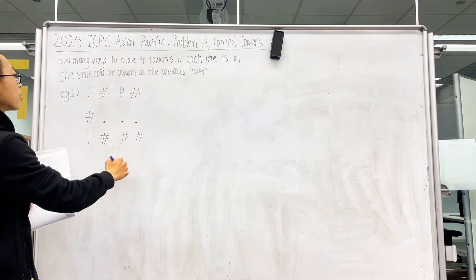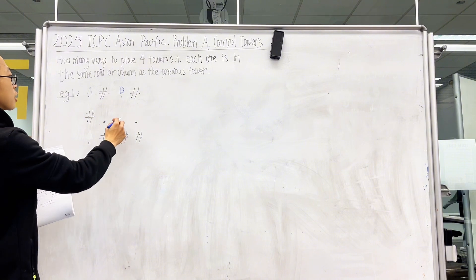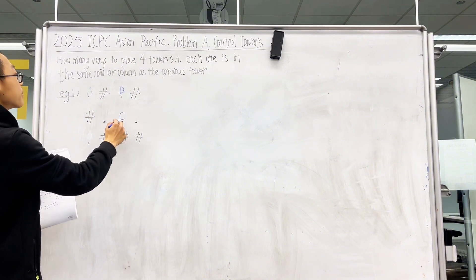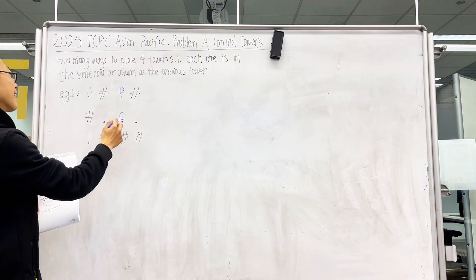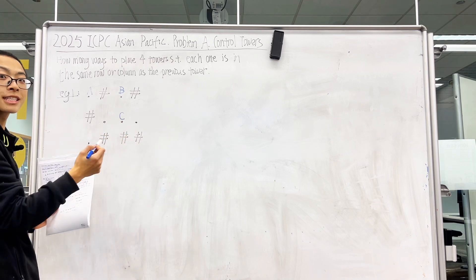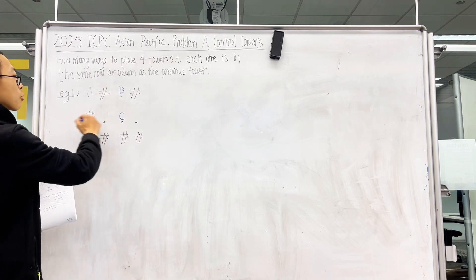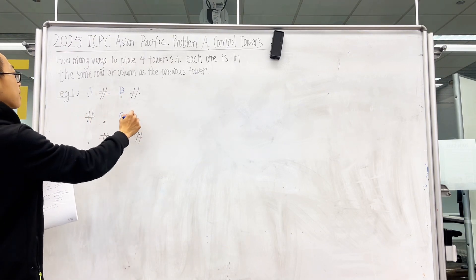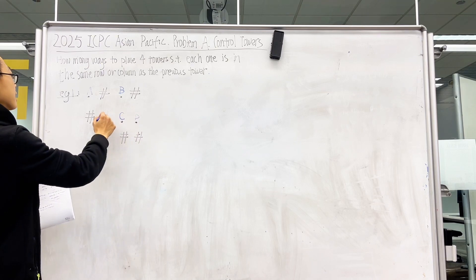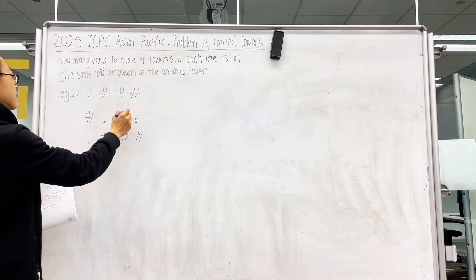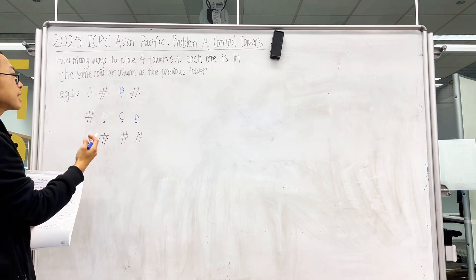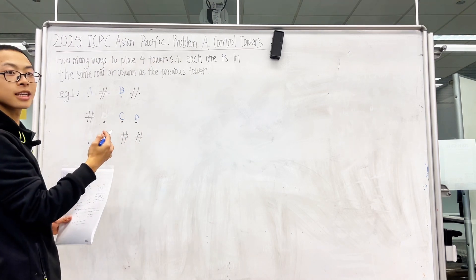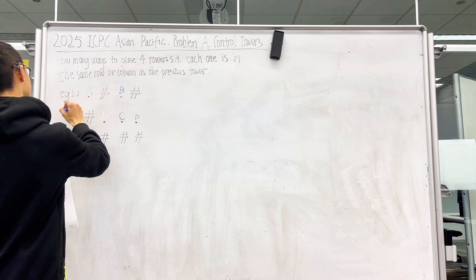Where can we place C? Same row, same column. So C can only be placed here. And now for D, what are the choices? Same row — we can place D here or D here. Let's try placing it here. This is one configuration.